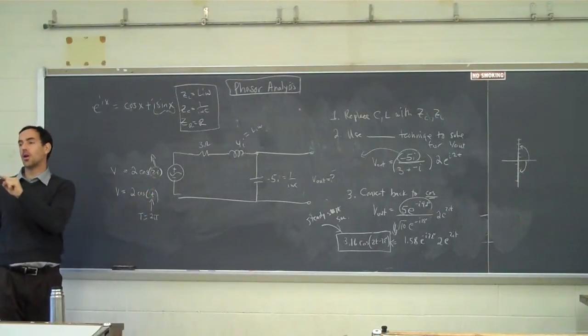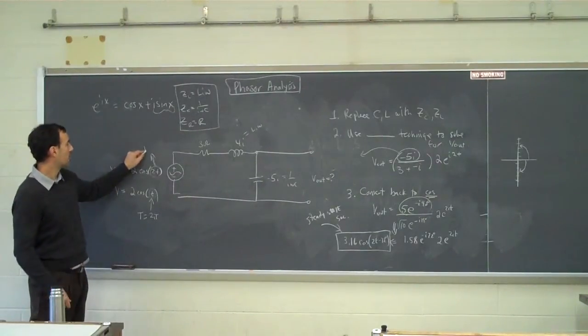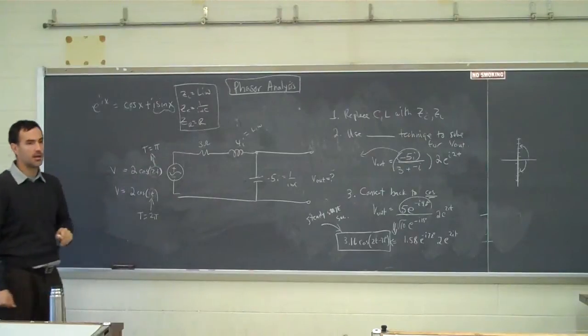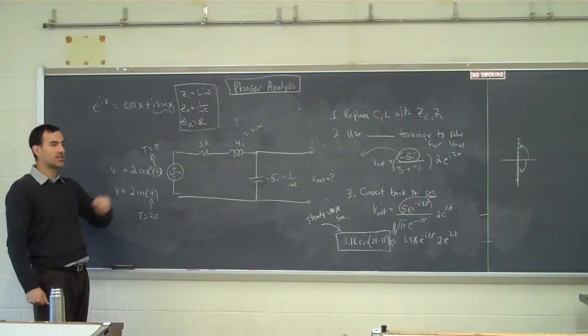But cosine 2t will be going twice as fast. So here the period would be pi. The 2t makes it go twice as fast.